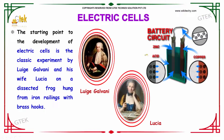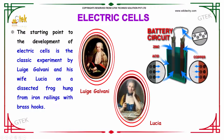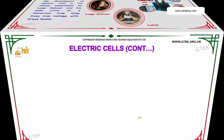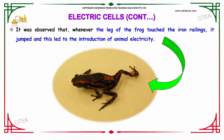If you talk about the history of electric cells, the starting point of the development of the electric cell is the classic experiment made by the great physicist Luigi Galvani and his wife Lucia, using a dissected frog hung from iron railings with brass hoops. It was discovered that whenever the leg of the frog touched the iron railings, it jumped, and this led to the introduction of animal electricity.